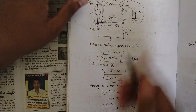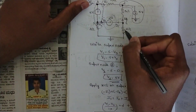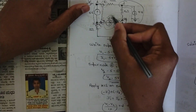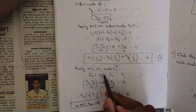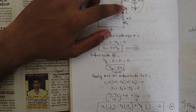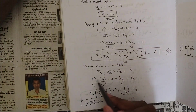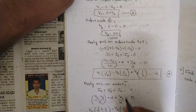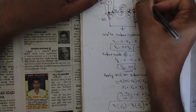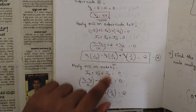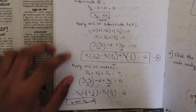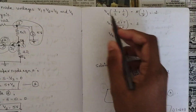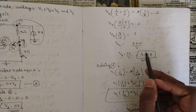Apply KCL on node 4 — three branches meet: I4, I5, I6. The value of I5 is -2 amperes due to opposite direction. I4 = V4 / 2, I6 = (V4 - V2) / 5. Substitute V2 = 5 volts, solve for V4, and we get V4 = 4.28 volts.